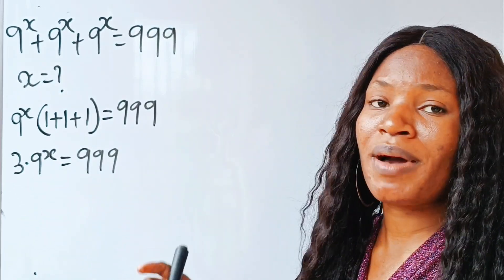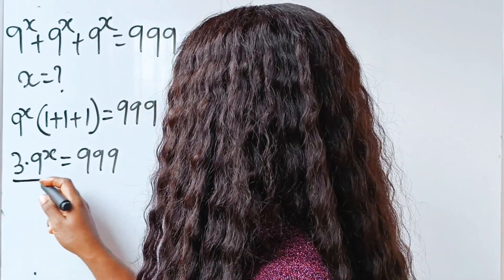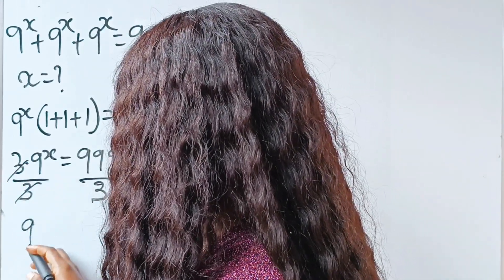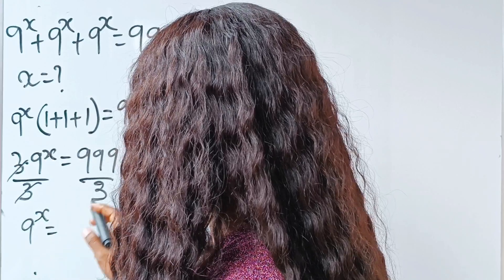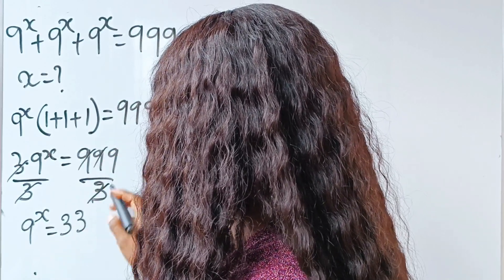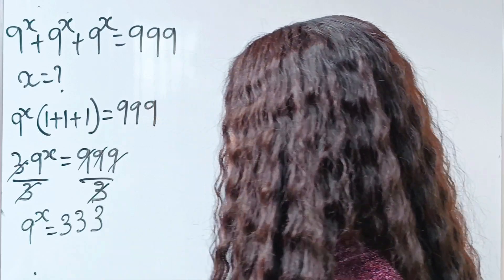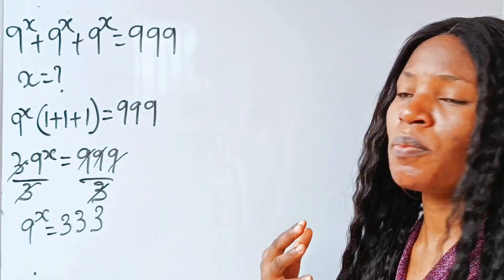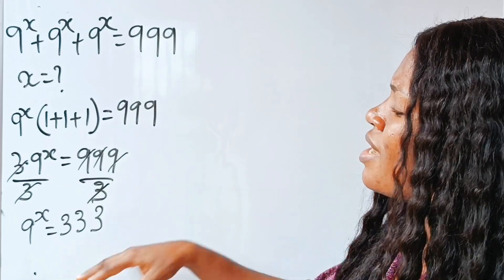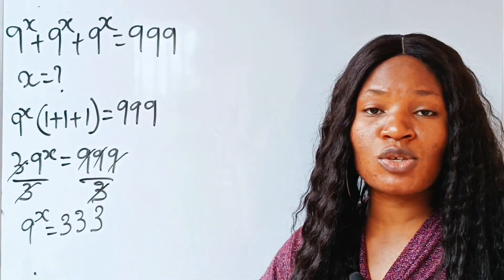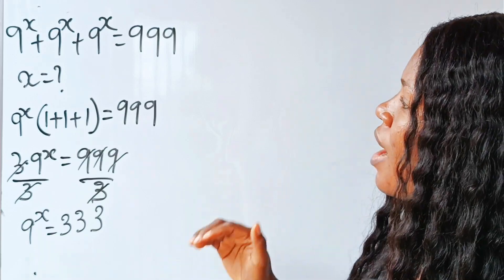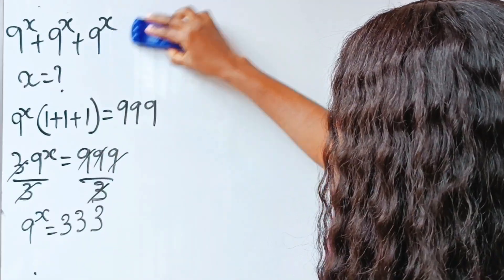I want to have just 9 to the power of x on the left-hand side, so I'll divide through by 3. Dividing both sides by 3 gives us 9 to the power of x is equal to 333. Now, when you look at this, the way to proceed is to introduce logarithms and see how this works.